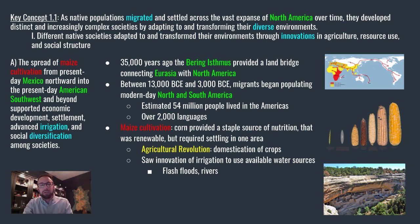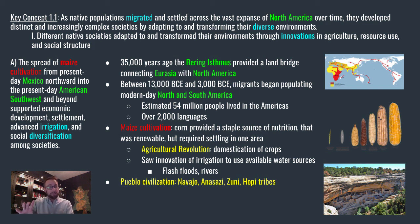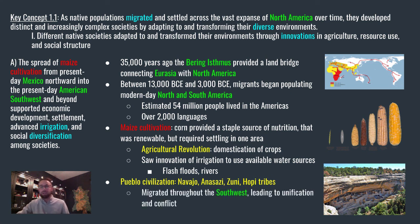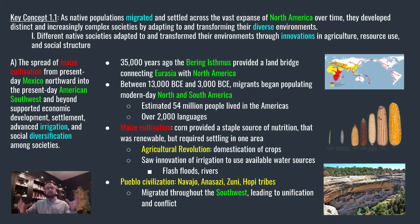A broad term for the American Southwest is Pueblo Civilization. Pueblo is actually a Spanish word used to name their types of dwellings, but it's the broad umbrella term for many tribes such as the Navajo, the Anasazi, the Zuni, and the Hopi — many tribes that existed in the American Southwest today. Think the Mojave Desert, Arizona, New Mexico, even down into Mexico itself. These people migrated throughout the Southwest, leading to unification and conflict. What they had in common was living in the desert, trying to use water to grow crops, specifically corn.